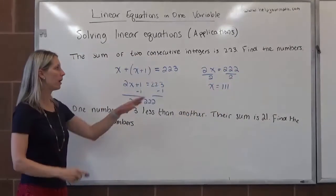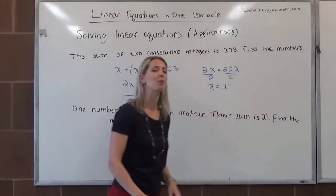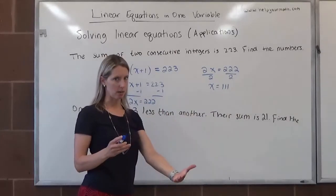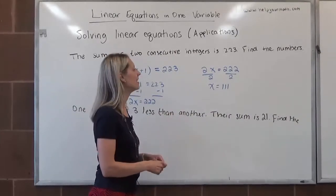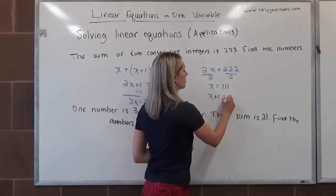We know one of the numbers is 111, but it does say find the numbers, plural, which means there's more than one. So the first one is 111, what's the next consecutive integer after that is 112. So x plus 1 is 112.